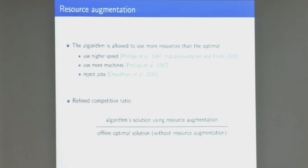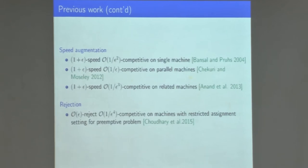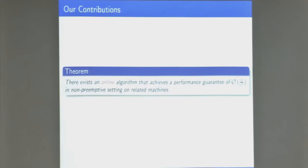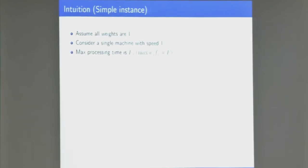Related prior work in the speed augmentation model shows that for the weighted problem, with epsilon extra speed you get a constant competitive ratio. However, those results are in settings where either weights equal 1 or they are preemptive. The rejection paper itself proposed a competitive ratio but for a preemptive problem, not non-preemptive. Non-preemptive problems are much harder. What we show is that you can get a constant competitive ratio if you reject an epsilon fraction of jobs — a constant competitive ratio without preemption.